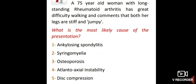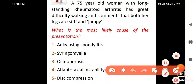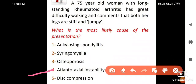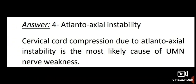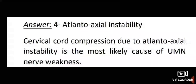A 75-year-old woman with long-standing rheumatoid arthritis has great difficulty walking and comments that both her legs are stiff and jumpy. The most likely cause of her presentation is atlantoaxial instability. Cervical cord compression due to atlantoaxial instability is the most likely cause of upper motor neuron weakness.